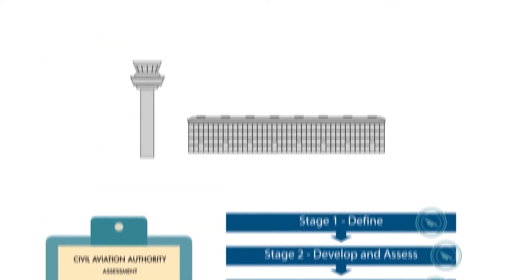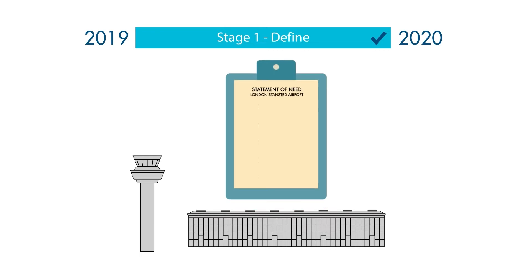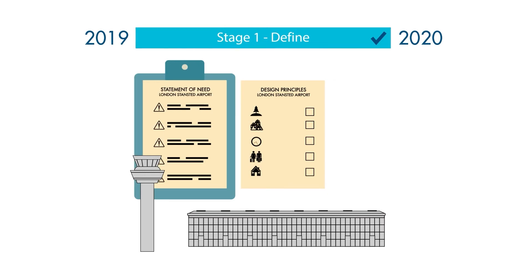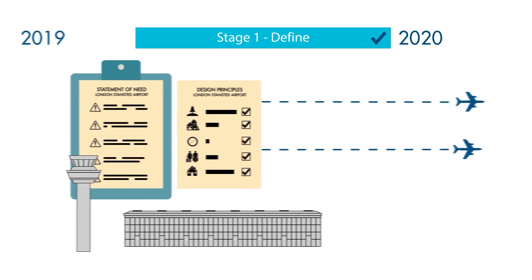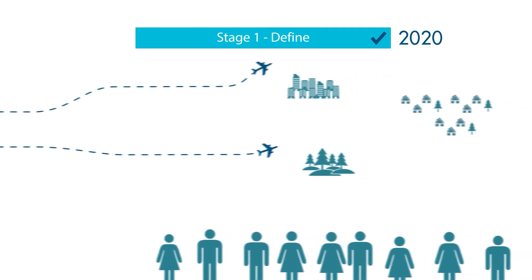London Stansted Airport started the process in 2019 and completed Stage 1, DEFINE, during Summer 2020 by submitting our Statement of Need, which sets out why we believe changes are required and establishing a set of design principles. These are high-level considerations used to guide the development of our route options. Our design principles were developed through stakeholder engagement in 2020.